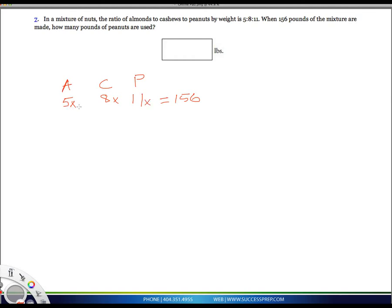the original ratio of 5 doesn't mean that there are five almonds, eight cashews, and eleven peanuts. That's not what it's saying—it's just the ratio.